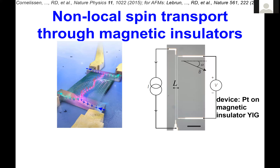Audience question: In this experiment, the spin current goes from left to right, which is much smaller distance than the charge current — is the idea in the future that this distance will increase by various techniques? Answer: Yes, I will show results for various distances L because this gives information on the decay length.